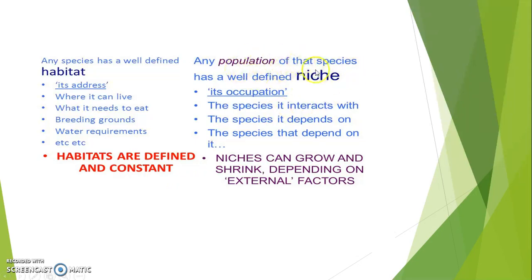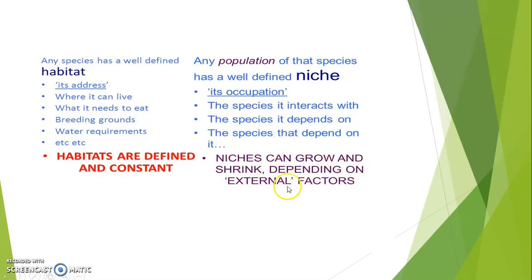Any population of a particular species has a well-defined niche. Niche is basically its occupation, or you can say profession. A species interacts with other species — it depends on certain species, and other species depend on it. Niche can grow and shrink depending on external factors such as light and temperature.